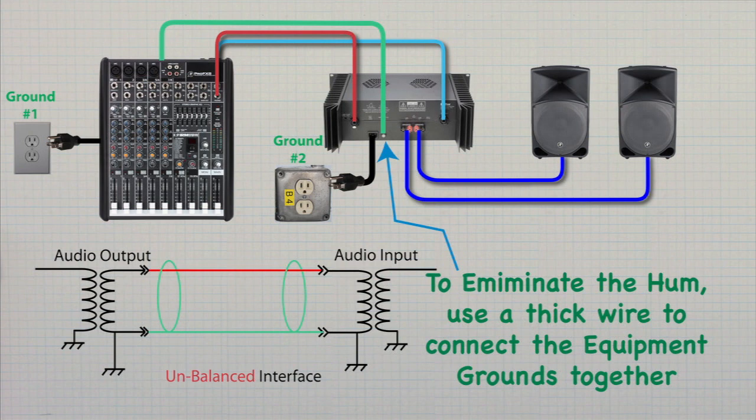Another way to eliminate the ground loop hum is to connect a large gauge grounding wire between the mixer and the amplifier. This will give the ground loop current a lower resistance path to travel rather than over the shield of the audio cable.